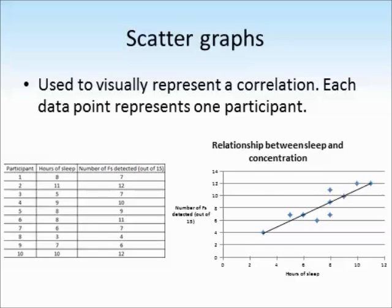You can add a line of best fit to your scatter graph. It doesn't need to start at zero, but it should connect as many data points as possible.